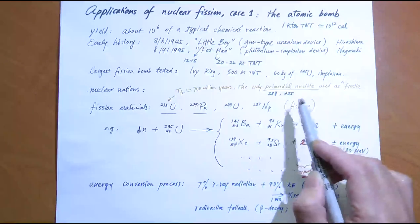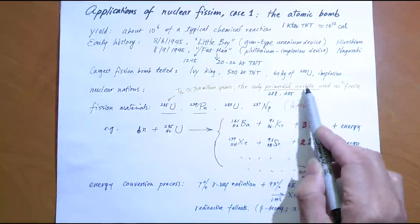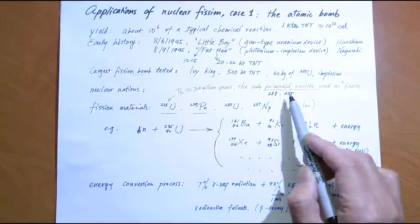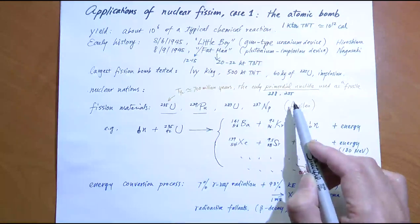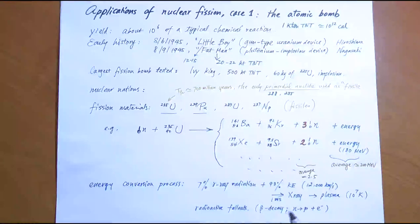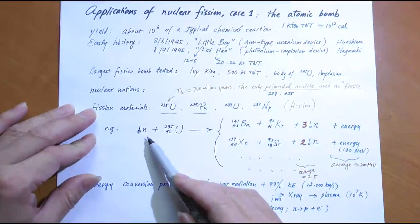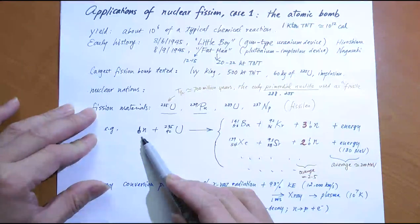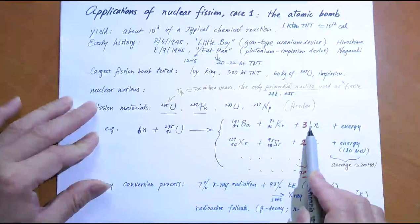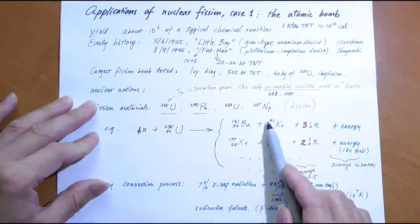Uranium-235 is quite unique in this respect. Here is a typical fission event: it captures a neutron, then splits into two parts plus neutrons plus energy. There are different ways for it to split — into various products Y and Z. For example, it can split into barium and krypton, or other combinations. The number of neutrons emitted varies.